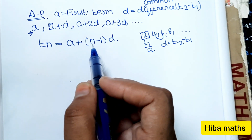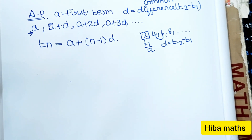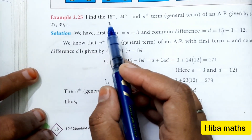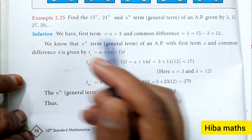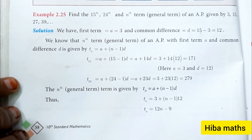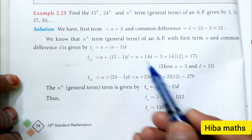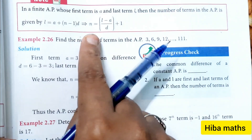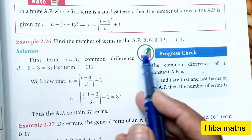In the T(n) formula, 'a' is the first term, 'n' is the number of terms, and 'd' is the common difference. For example, a series like 3, 15, 27 can be verified. The formula for finding number of terms is: n is equal to L minus A divided by D, plus 1.